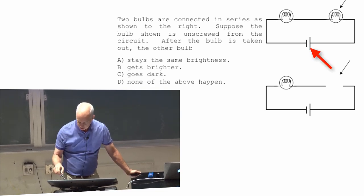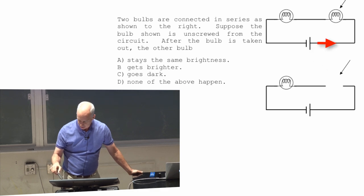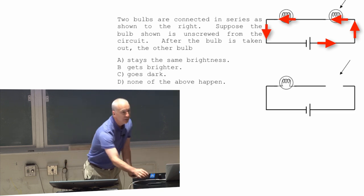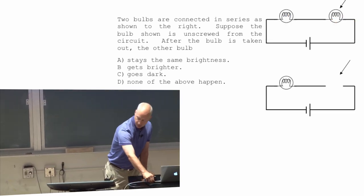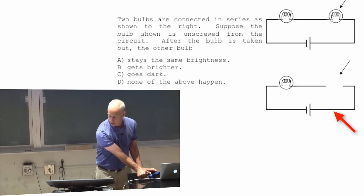Battery, this is the positive side of the battery. So the battery pushes current this way, through this one, through that one, and then around. What happens if I pull one of those out so the end result looks like this? That's my question for you.